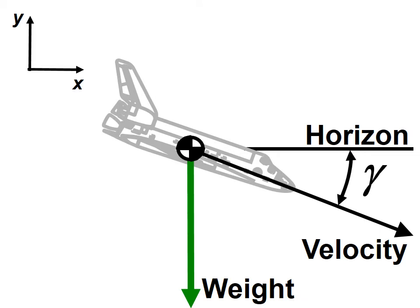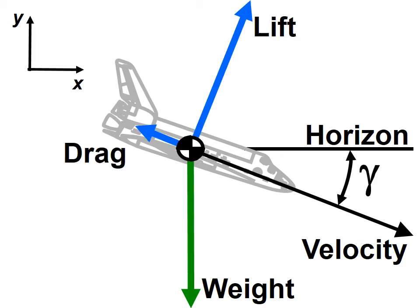Next we show the forces on the spacecraft beginning with gravity perpendicular to the horizon. We now add the aerodynamic forces, drag parallel to the velocity vector, and lift perpendicular to it.